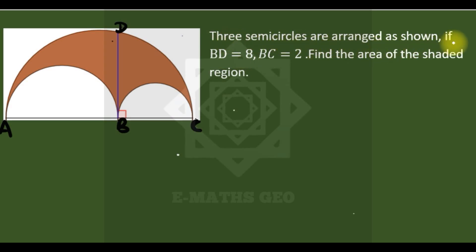Three semicircles are arranged as shown. If BD is 8 and BC is 2, find the area of the shaded region. As you can see, to get the area of this shaded region, we subtract the area of these two semicircles from the largest. So let's solve. Let's call the diameter x. BC they say is 2, and BD they say is 8.